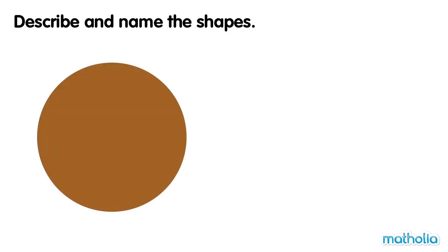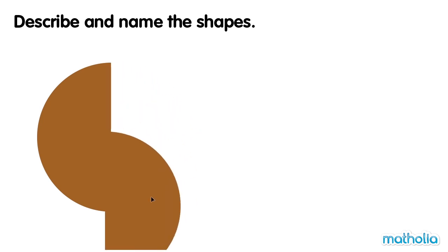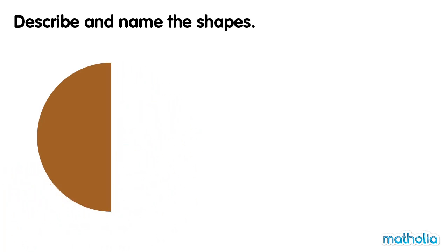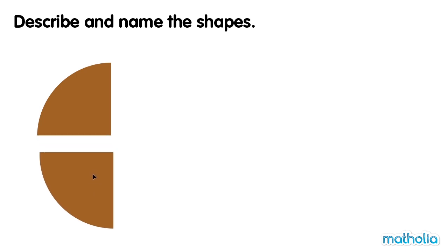This shape is also a circle. If we take half of the circle away, we have a semicircle. Now, if we take half of the semicircle away, we have a quarter circle.